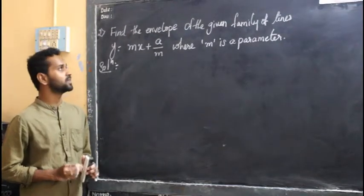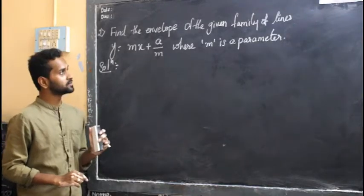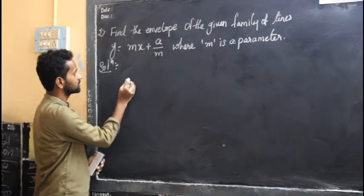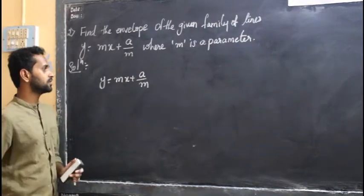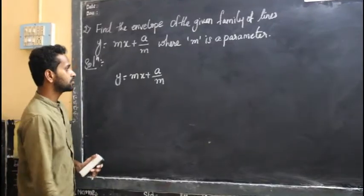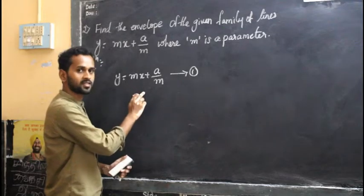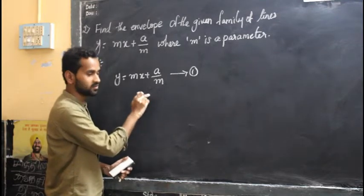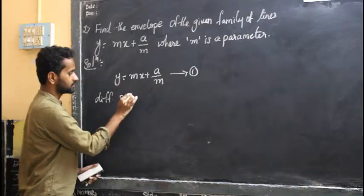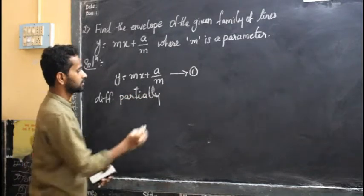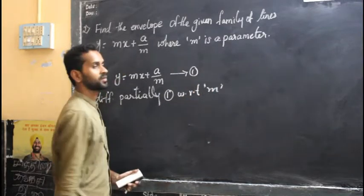Now, find the envelope of the given family of lines: y equal to mx plus a by m, where m is a parameter. The given family of lines is y equal to mx plus a by m — this is equation 1. You should compare this for f of x, y, m equal to 0. The next step is to differentiate partially with respect to m.